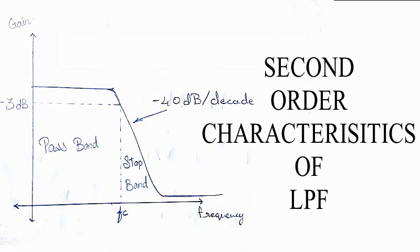As with the passive filter, a first order low pass active filter can be converted into a second order low pass filter simply by using an additional RC network in the input path. The frequency response of the second order low pass filter is identical to the first order type, except the stop band roll-off will be twice the first order filter at 40 dB per decade. When cascading together filter circuits to form higher order filters, the overall gain of the filter is equal to the product of each stage.